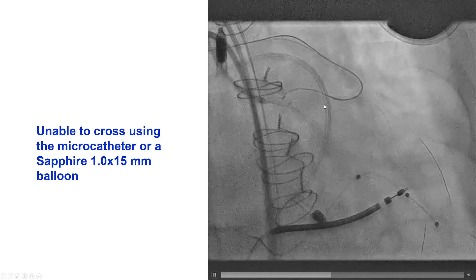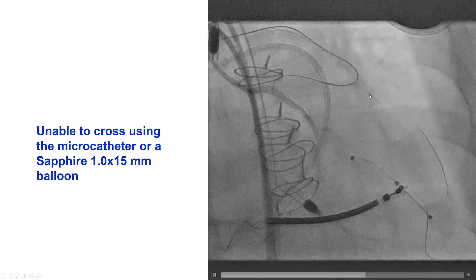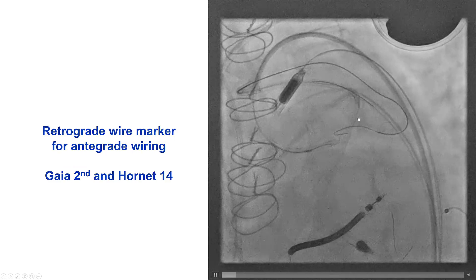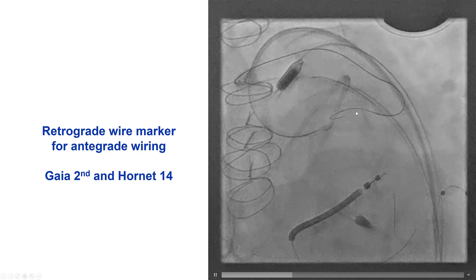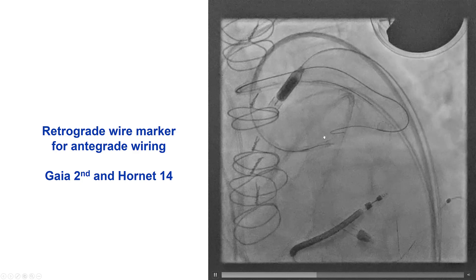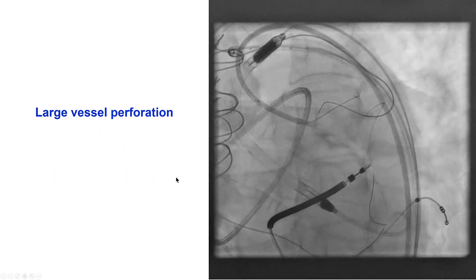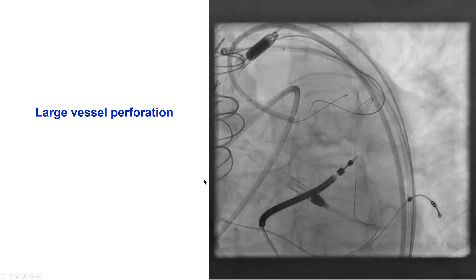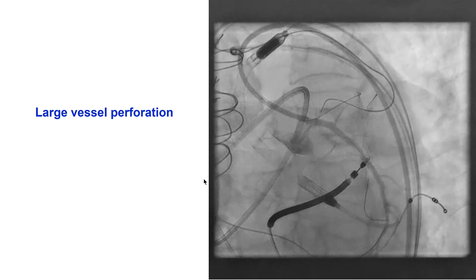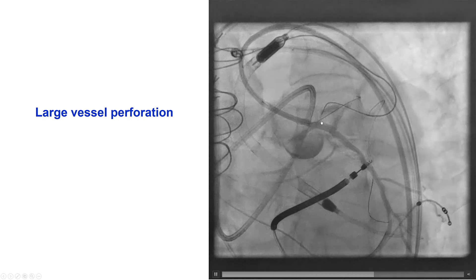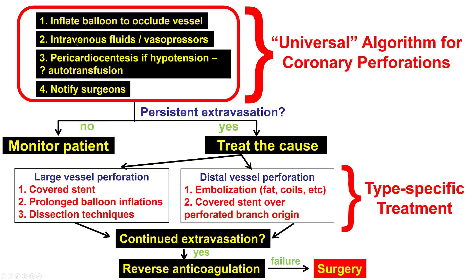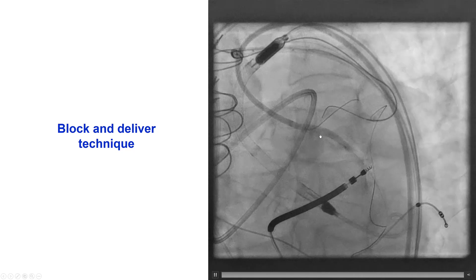Nothing would advance — we could not advance a microcatheter or a Sapphire balloon retrograde into the LAD. We thought that since we had wire into the proximal LAD, we could use the retrograde guide wire as a marker to perform antegrade puncture. We tried with a Gaia II and also a Hornet 14. But what happened was not what we expected: we had a significant large vessel perforation while trying to advance our guide wire. The first step is always to inflate a balloon to occlude the vessel, and for a large vessel perforation like this one, use a covered stent. We inflated a balloon that sealed the perforation.